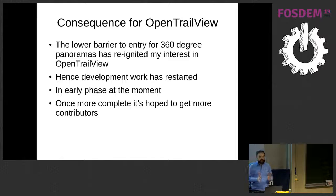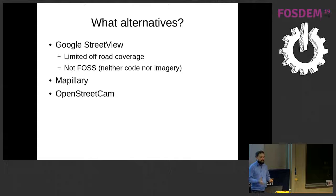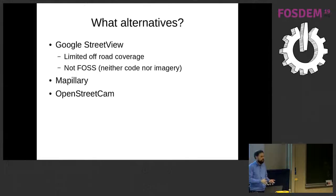The whole barrier to entry is less now because you can use these 360 cameras, and I've started developing the project again. Before I talk about the technical details of how it's now working, I want to cover some of the alternatives that have come on stream since I originally started the project. Google Street View is the obvious one, but obviously that's not FOSS software at all and has limited off-road coverage. There's also Mapillary and OpenStreetCam.